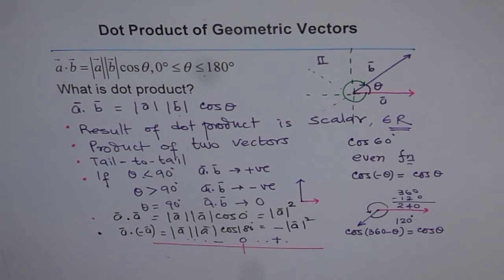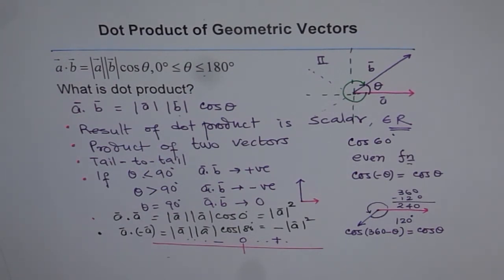From here onwards we will move on from geometric vectors to coordinate systems and algebraic vectors. We will first explore dot product of geometric vectors and then move on to algebraic calculations. An important application of dot product is work done: work done equals force dot distance, which is a scalar measured in joules or newton-meters. I hope you find this concept interesting because we will be applying dot product in many places.